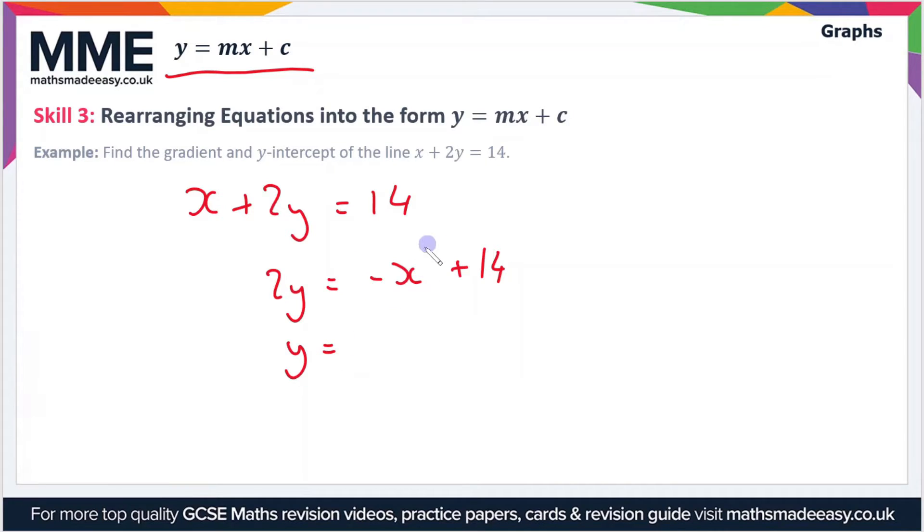We could write this as y equals minus x plus 14 divided by 2, but that's not really useful in terms of putting it in the form we want. So we can write it as y equals minus x divided by 2 plus 14 divided by 2, which is 7. Another way we could write this is y equals minus a half x plus 7, which, as you can see, is in the form y equals mx plus c.